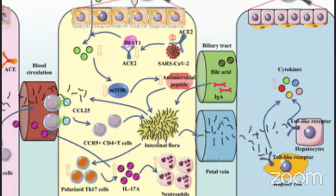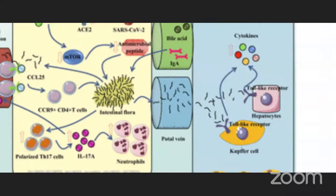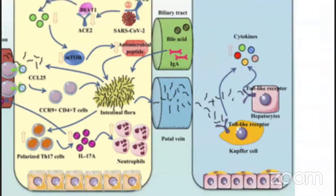Second, the gut-lung and gut-liver axis. SARS-CoV-2 binds with ACE2 to enter the intestine, then inhibits the ACE2 transport pathway and affects the activation of mammalian target of rapamycin (mTOR), reducing expression of antimicrobial peptides. The intestinal flora is transferred to the liver through the portal vein, as seen in the diagram, where it binds to toll-like receptors. This is the reason why hepatitis occurs. The liver can also transport metabolites to the intestine through the biliary tract.